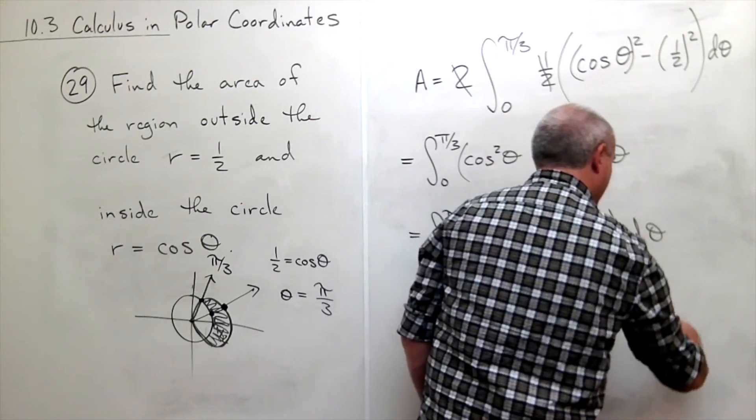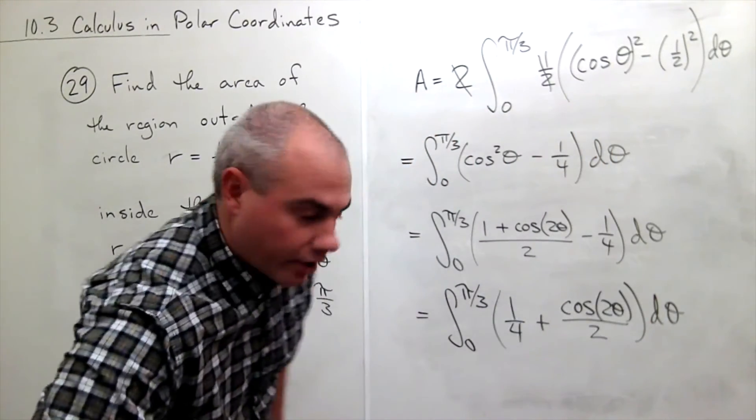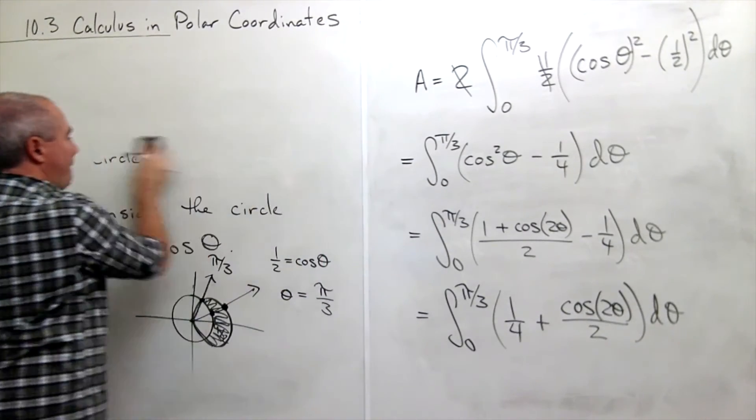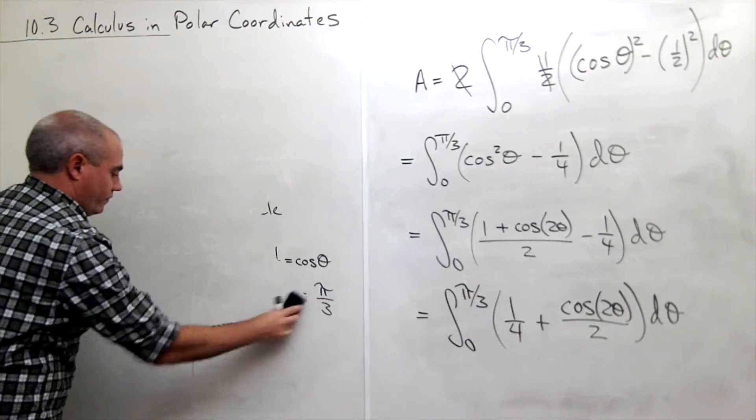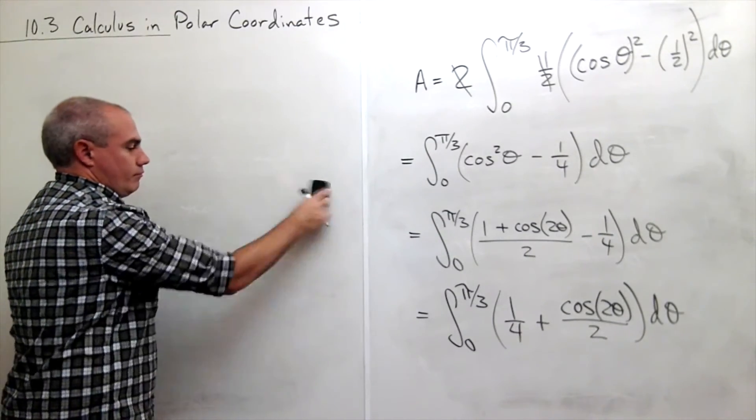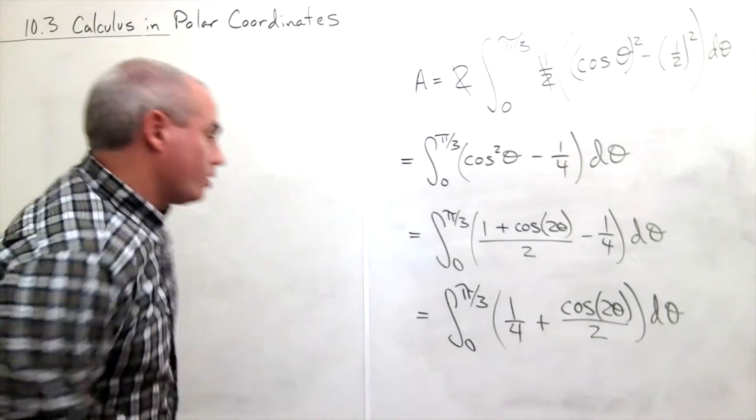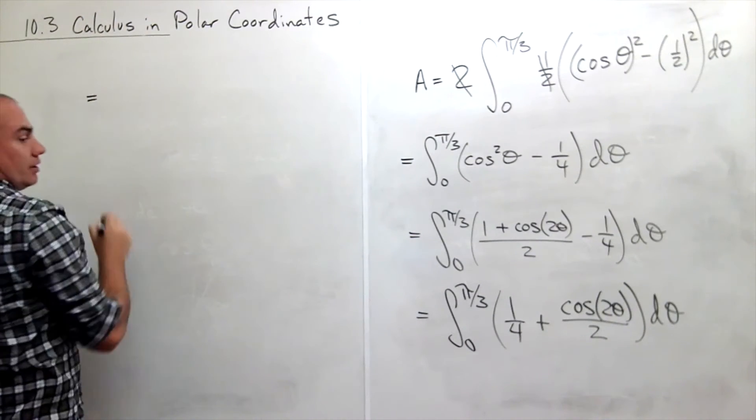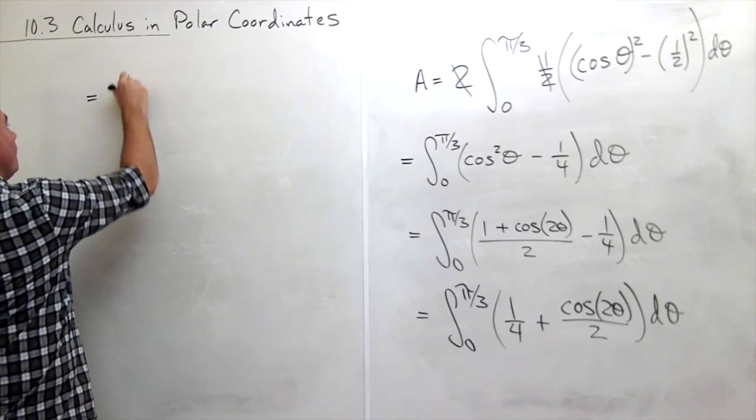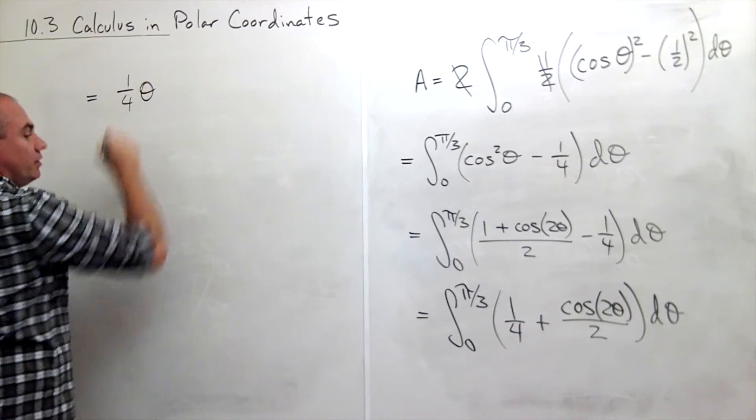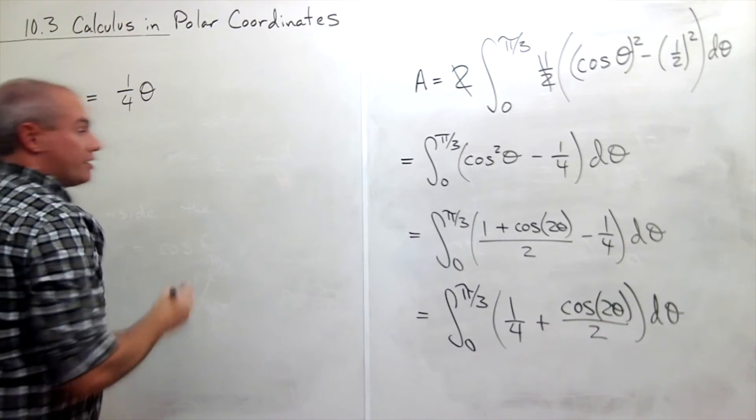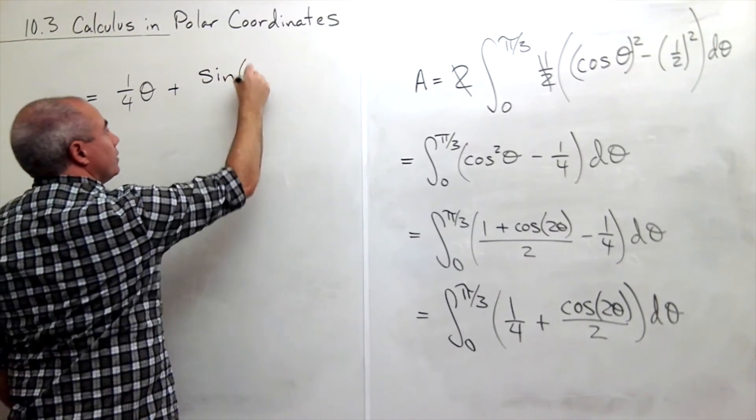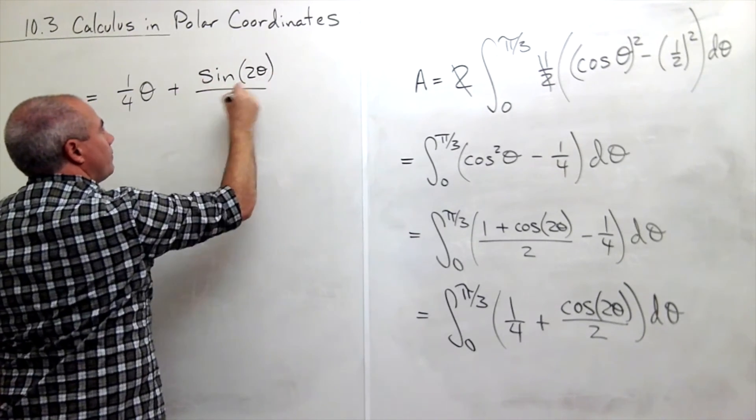all of that d theta. Alright, let's move over here. And we have, let's take an antiderivative, this would be one-fourth theta plus sine of 2 theta divided by 4,